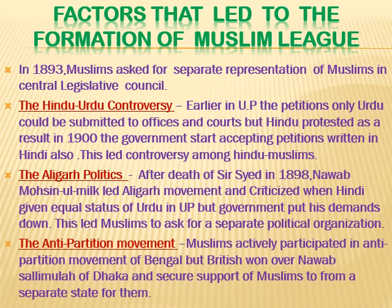Fourth was the anti-partition movement. When the partition of Bengal happened in 1905-1906, Muslims initially actively participated in boycotting the partition. But the Britishers won over Nawab Salimullah Khan of Dhaka, making him realize that East Bengal was created as a Muslim-majority area so Muslims could rule that region and secure a separate state. The Britishers said they would look after Muslim interests better in this separate state and provide more help. As a result, the anti-partition movement was dropped by Muslims due to British persuasion.